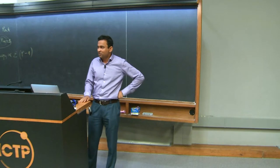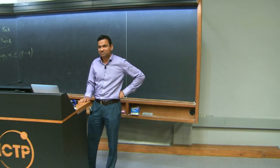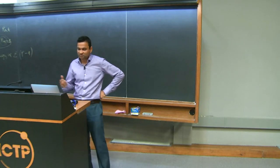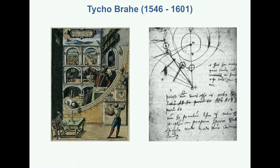Just to give some background: I have a background in modeling, but today I'm not going to present much of the modeling work. Instead, I'm going to try to bring an analogy to Tycho Brahe, who was a Danish astronomer who was looking into planetary motions. He was one of the first ones who made very accurate maps of positions of the planets and their dynamics, which eventually enabled the physical laws of motion.